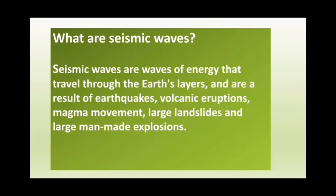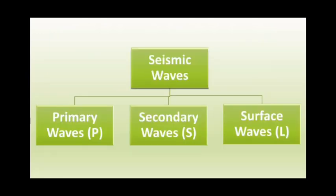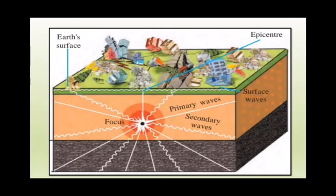The seismic waves are divided into three types: the first is the primary waves, also called P waves; the second is the secondary waves, also called S waves; and the third is the surface waves, also called L waves. The diagram of seismic waves in front of you shows all three wave types, as well as the epicenter, focus, and the earth's surface, which is totally destroyed because of the earthquake.